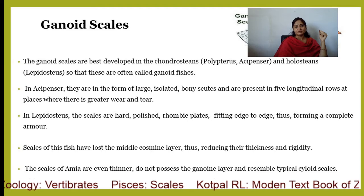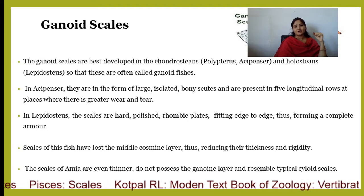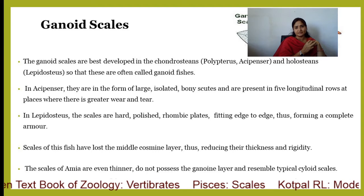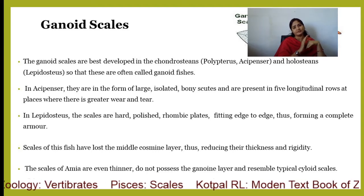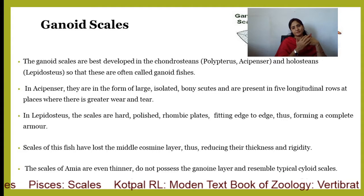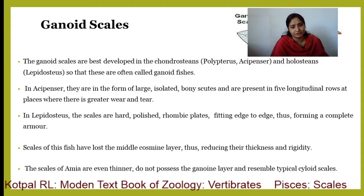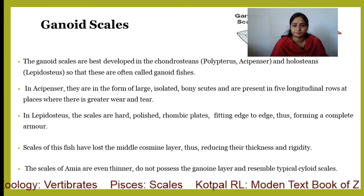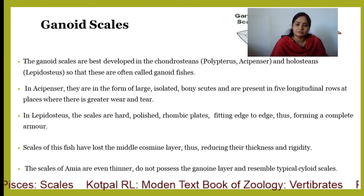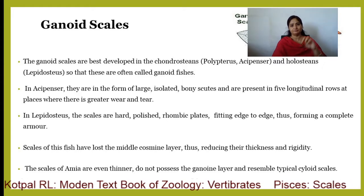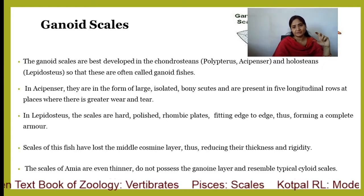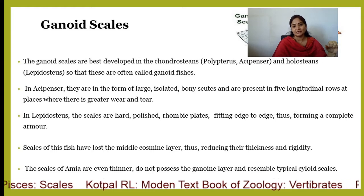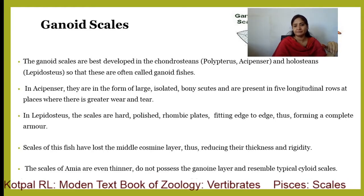In Acipenser, scales are formed as large isolated bony scutes and present in five longitudinal rows, in places where there is greater wear and tear. In Lepidotus, the scales are hard, polished, rhomboid plates fitting edge to edge, thus forming a complete armor. Scales of advanced fishes have lost the middle cosmine layer, thus reducing their thickness and rigidity. Scales of Amia are even thinner, do not possess the ganoin layer, and resemble typical cycloid scales.